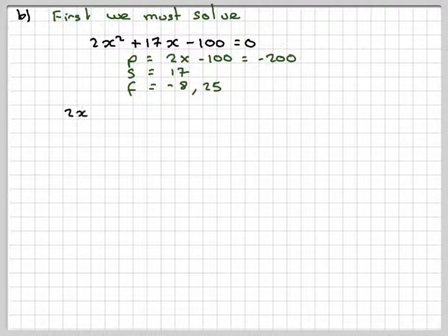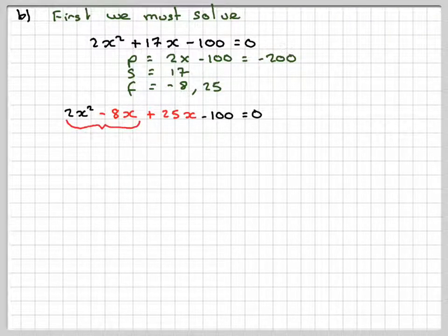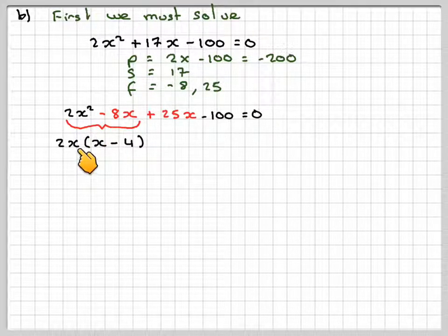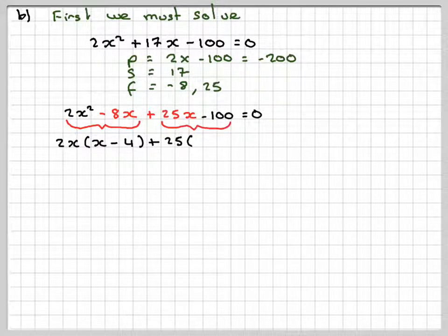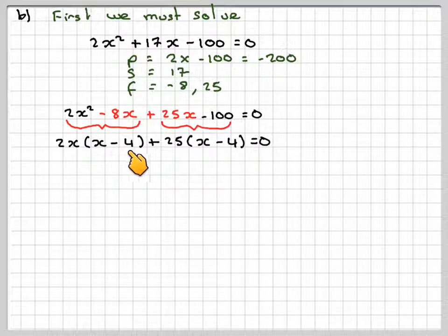Now, we take the quadratic and rewrite it. We've got 2X squared minus 8X plus 25X minus 100 is equal to 0. We group the first two terms together and take out 2X, and get X minus 4. 2X times X gives 2X squared, 2X times minus 4 gives minus 8X. We bring down the plus sign. We take out a common factor of 25, and get X minus 4, which is equal to 0. 25 times minus 4 gives minus 100. This can now come out as a common factor.